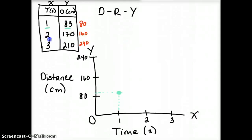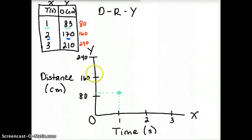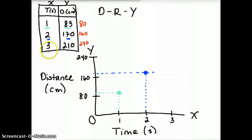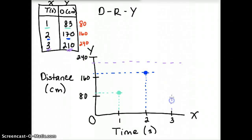In two seconds the car traveled 170 centimeters. So we find two seconds on the x-axis, estimate 170 on the y-axis, draw dotted lines, and place a dot where they intersect. In three seconds it traveled 210 centimeters. We find three seconds on the x-axis, and 210 is approximately here, and they intersect right there.